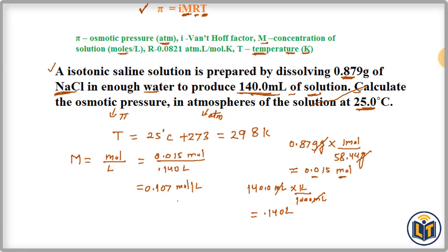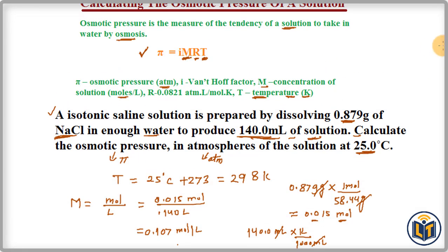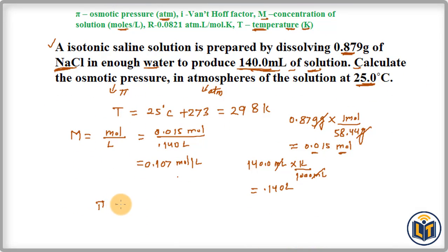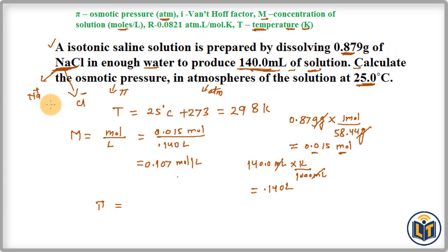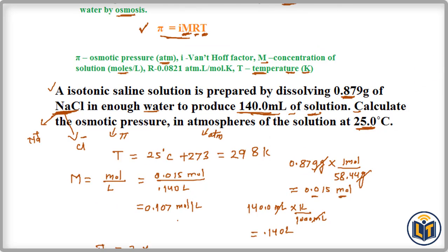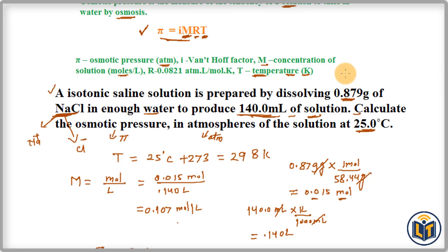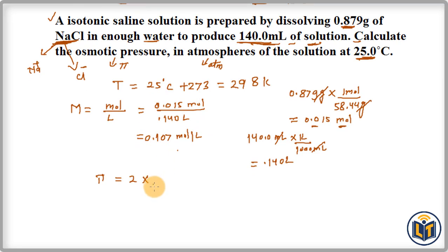Now we apply the osmotic pressure formula: π = iMRT. For the van't Hoff factor i: NaCl is an ionic compound that dissociates into two ions in aqueous solution — Na⁺ (sodium ions) and Cl⁻ (chloride ions). Therefore, i = 2. We plug in i = 2, and M = 0.107 mol/L.